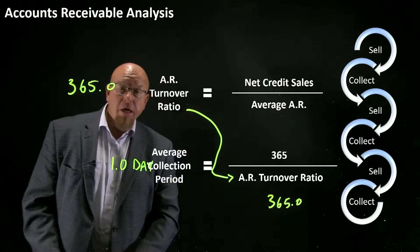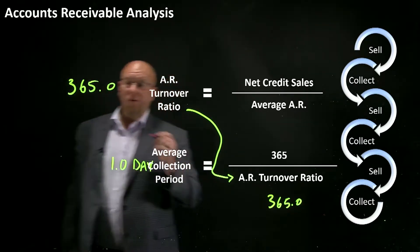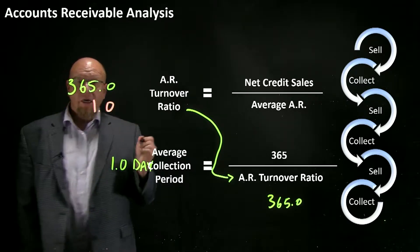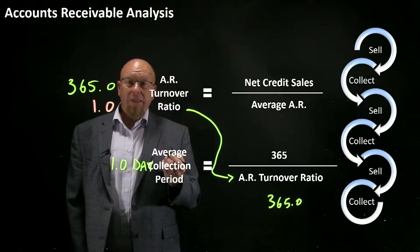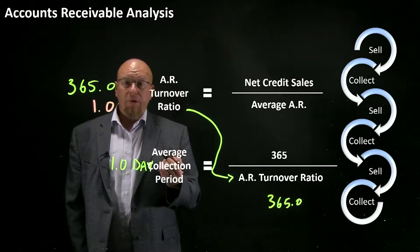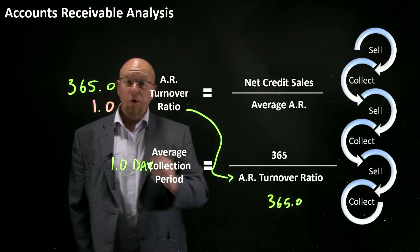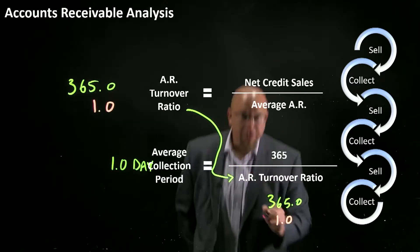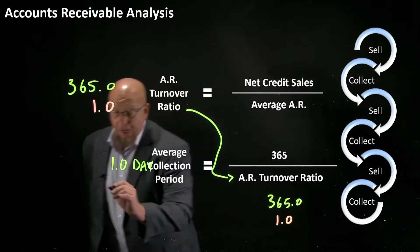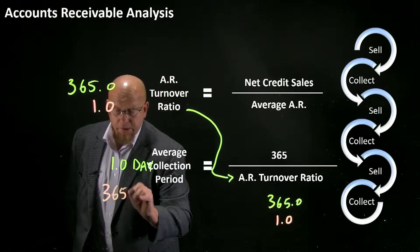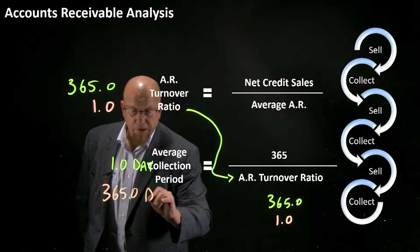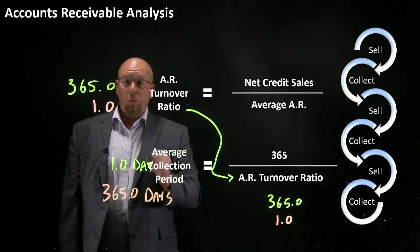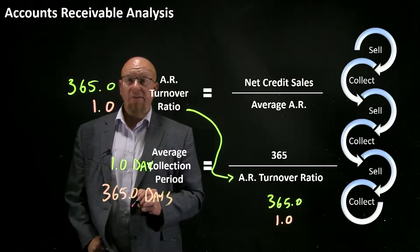We could look at another extreme. What if your accounts receivable turnover ratio was a dismal 1.0? In other words, we're only collecting those receivables one time per year. If that were the case, we'd be dividing 365 by one, and your average collection period would be 365 days. I would rather get paid in one day than 365 days.